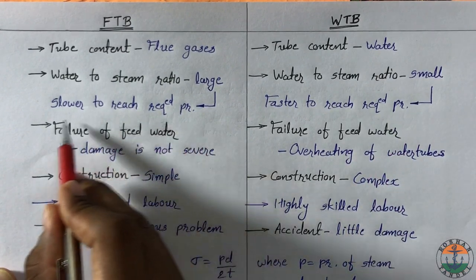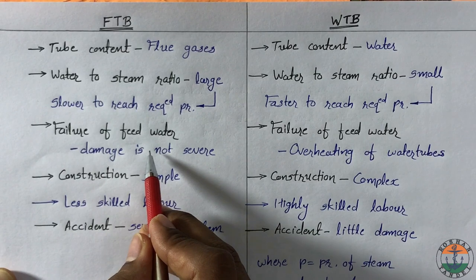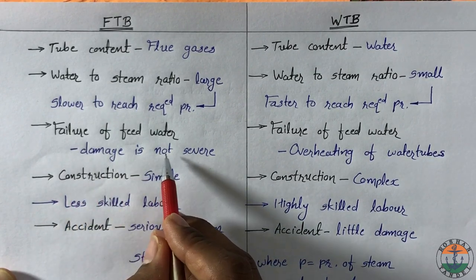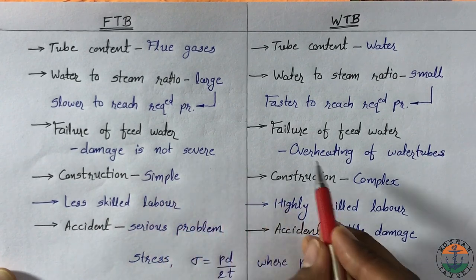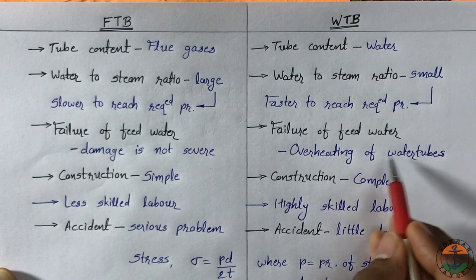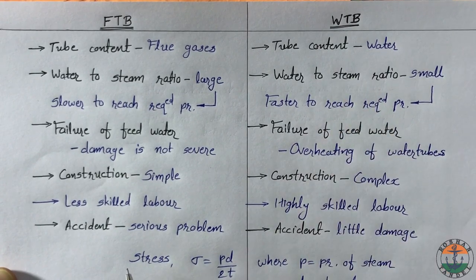In case of failure of feed water system, damage is not severe, as whole shell is filled with water. Failure of feed water supply causes overheating of water tubes in water tube boiler.